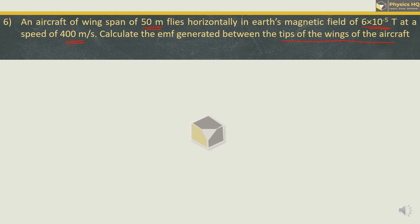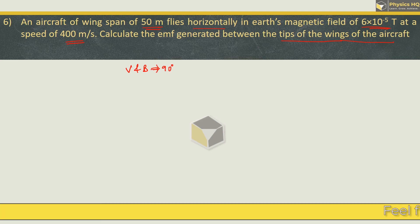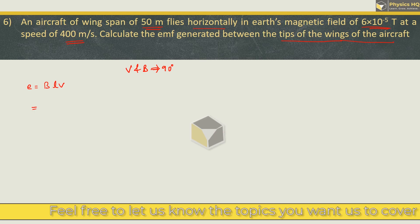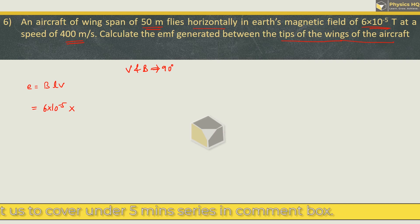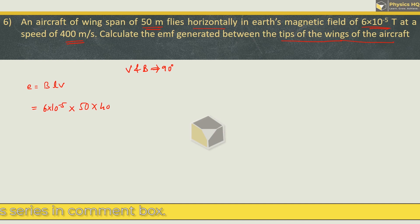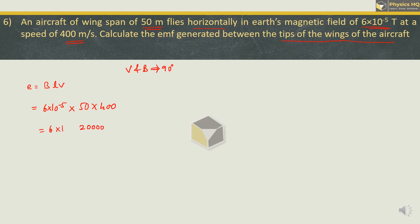Over here the plane is flying horizontally and the earth's magnetic field is vertical from south to north pole. So again the angle between velocity and the magnetic field is 90 degree. And as discussed in the first sum, we will be using the formula E equals BLV over here. B is given as 6 into 10 raise to minus 5. L over here is the wingspan which is 50 meter, into velocity is 400. So we got 5 fours are 20, 20,000 into 6 into 10 raise to minus 5. So this will be 6 twos are 12, or I would say 1.2 volts. Hope you all understood this.